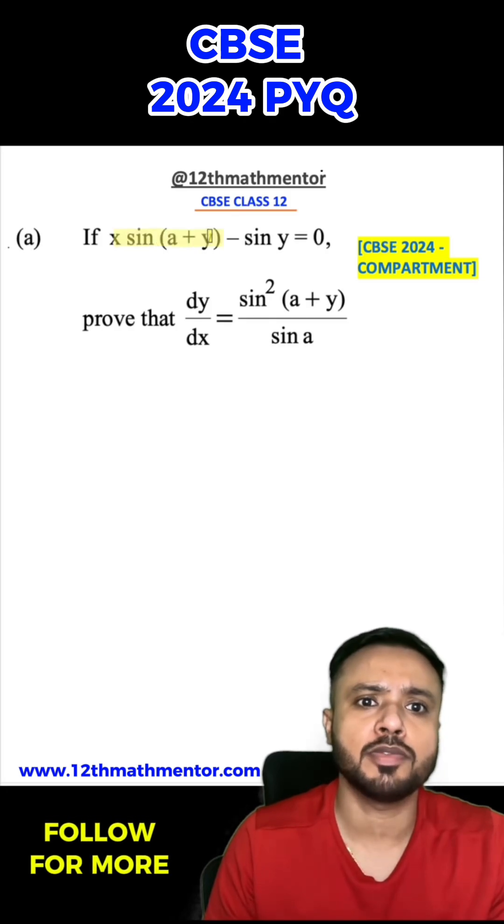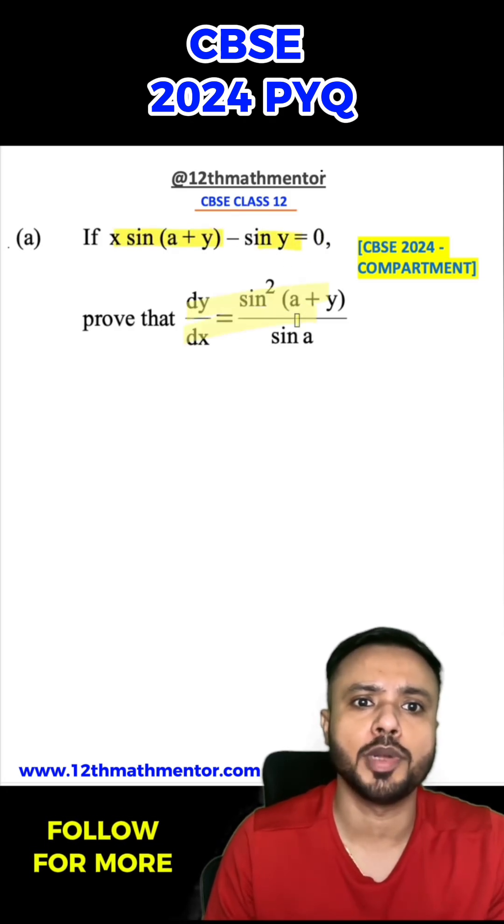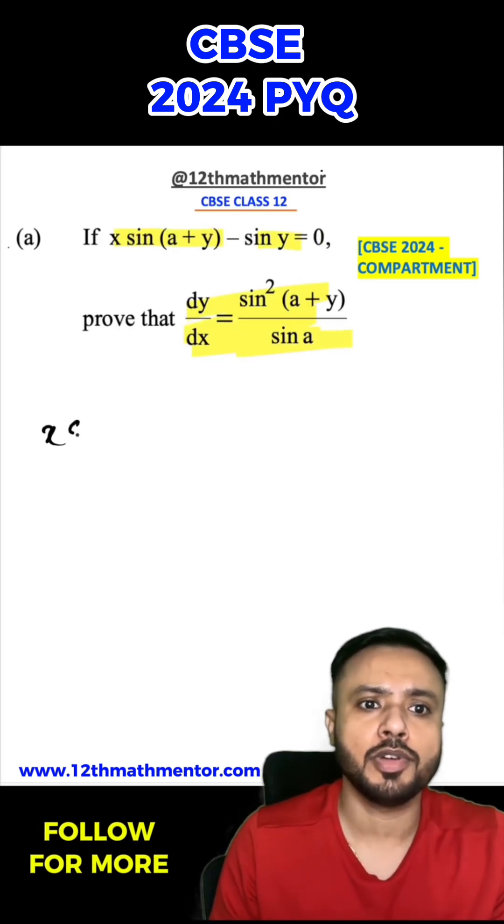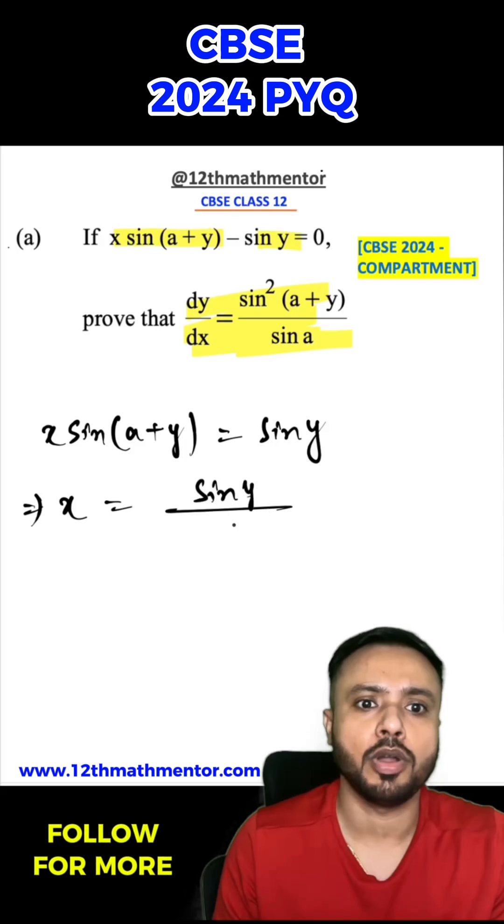In this question, it is given that if x sin(a+y) - sin y = 0, then we have to prove dy/dx equals a particular expression. The given equation can be written as x sin(a+y) = sin y, and then I can write x = sin y / sin(a+y).